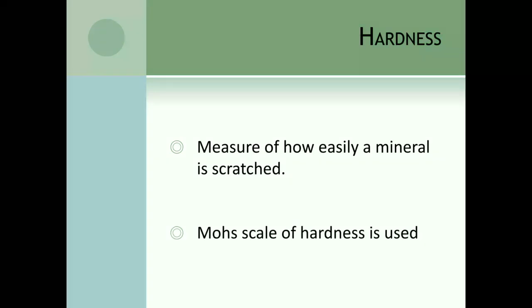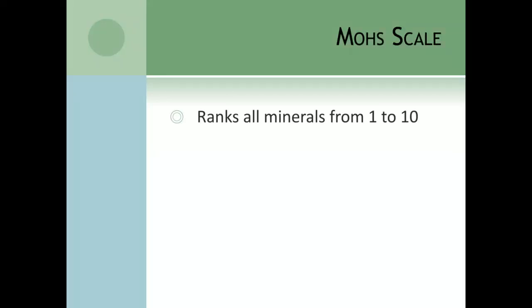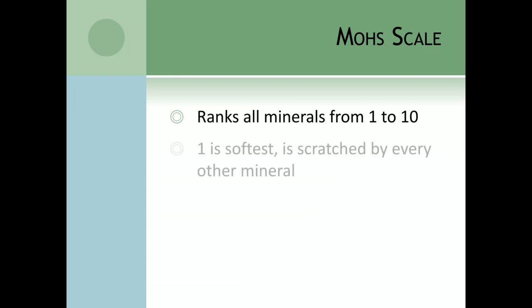The scientist who figured this out was Friedrich Mohs, and he developed the Mohs Scale of Hardness. He wanted substances accessible to geologists all over the world — nothing too rare — but a set of minerals that could identify the relative hardness of any mineral. He ranked all minerals on a scale from one to ten. One is the softest, scratched by almost every other mineral, and ten is the hardest.